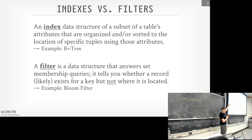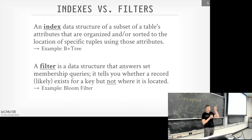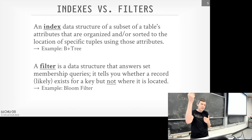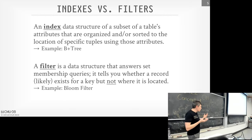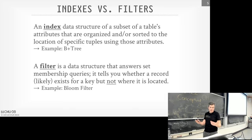A filter is a data structure that answers set membership queries — it can tell you whether a key exists in a set, but not where it is. A B+ tree will tell you where to find a key in your table; a filter, usually probabilistic, says 'I probably have that key' or 'I don't.' The most widely used filter is a bloom filter. A B+ tree is something a human must explicitly declare as an index; a bloom filter is more like an internal data structure.